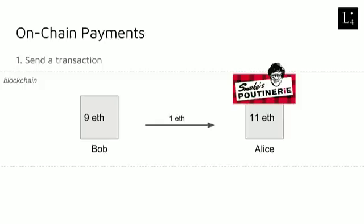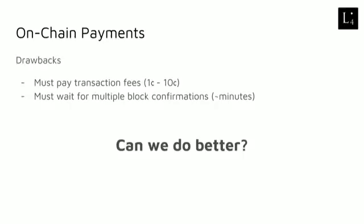The transaction gets picked up by a miner and we wait for more and more miners to build on that chain. After enough miners have done that, Alice can send the poutine over to Bob. Already here we can see some of the drawbacks of on-chain transactions. First, we have to pay transaction fees to the miner for every single payment that we want to make — today it's on the order of 10 cents, which is quite expensive. We also have to wait for the block confirmation time, which is on the order of a few minutes at least. So that's a really bad user experience.